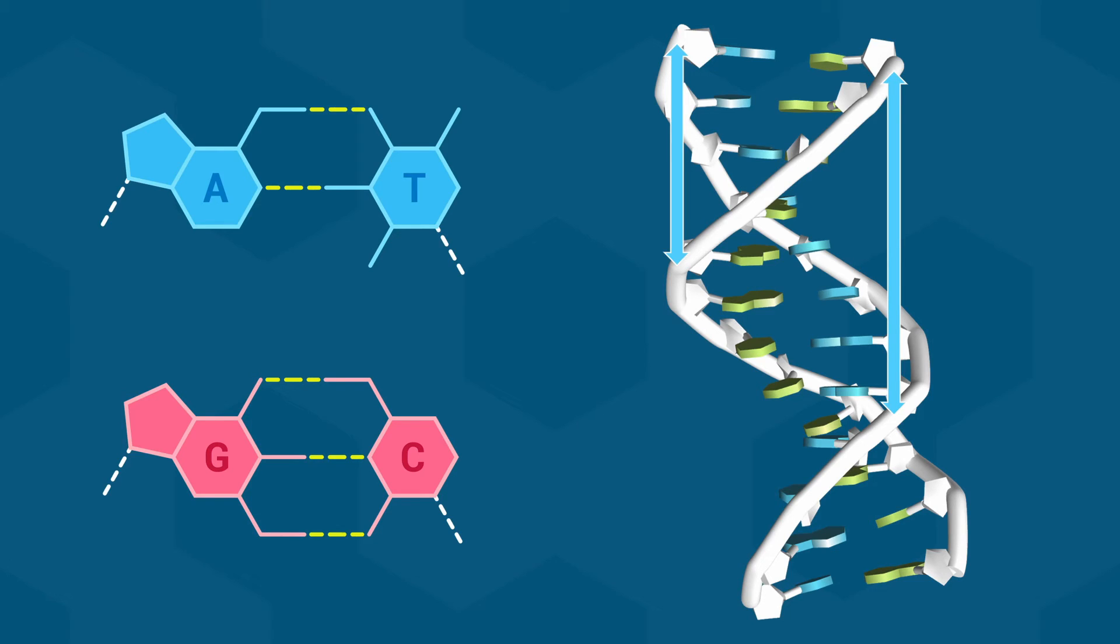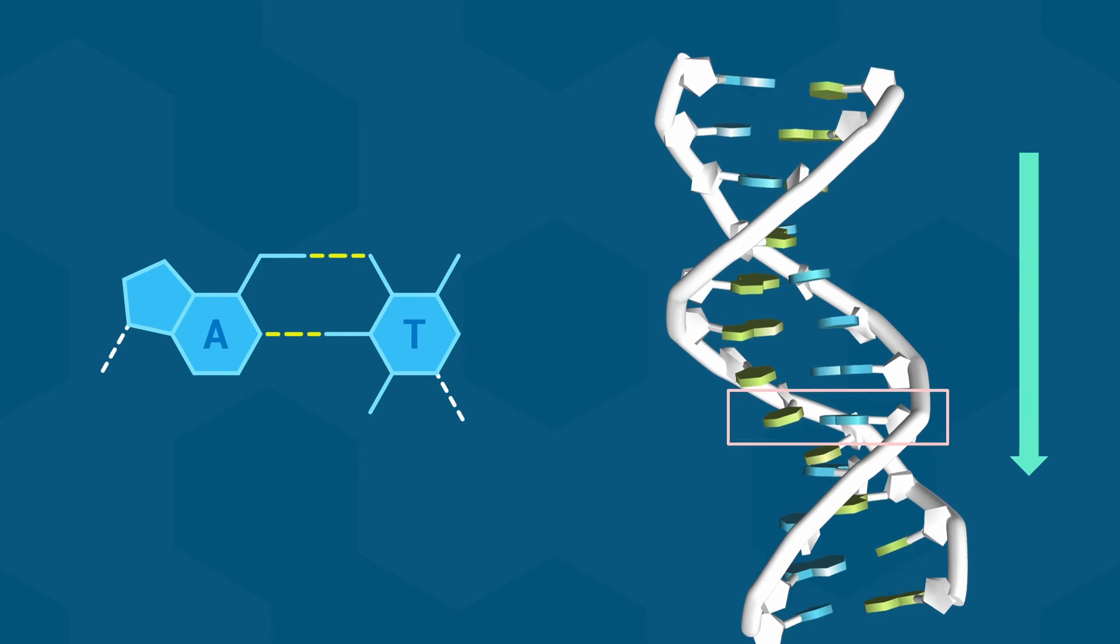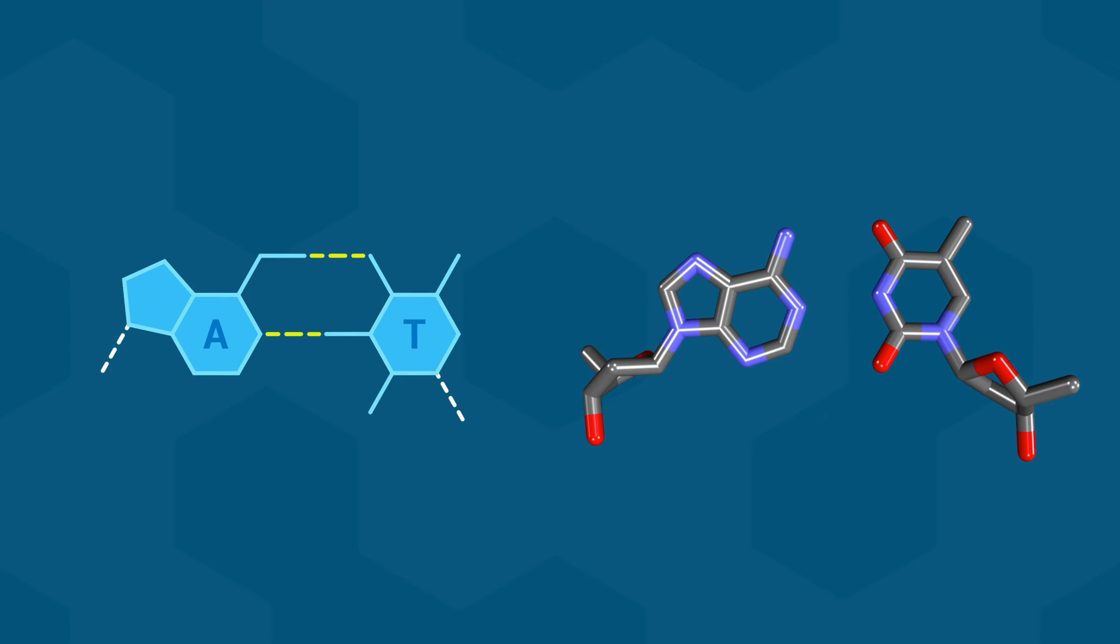Well, to answer that, let's take a closer look at a base pair, and for no particular reason I will choose the AT base pair located here in the helix. Let's look straight down the long axis of the helix at this base pair. Notice the point at which the bases are attached to the sugar-phosphate backbone. The two connection points are not 180 degrees across from each other, but rather closer together on one side than the other.